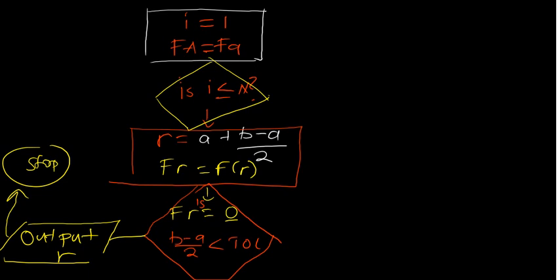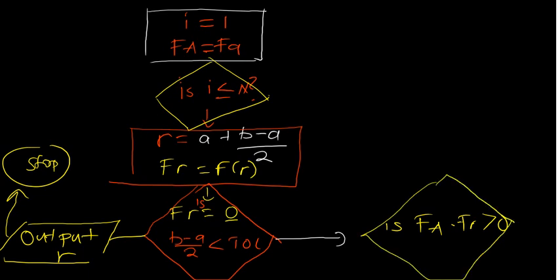Else what happens? Of course this may not always be true. So if it's false, we now need to ask ourselves a question to say okay, so which one are we going to discard, is it a or b? So the fact that we started with just the function of a, we are going to compare that. So say is the function of a multiplied by the function of r greater than zero, which implies it's a positive?